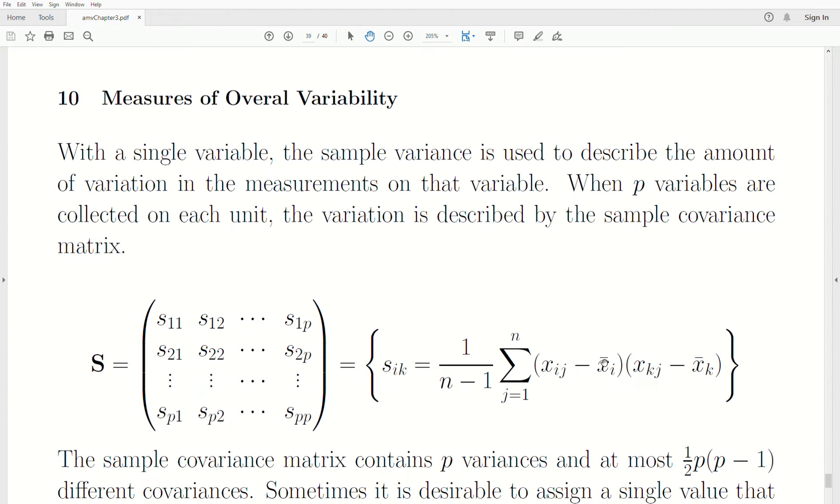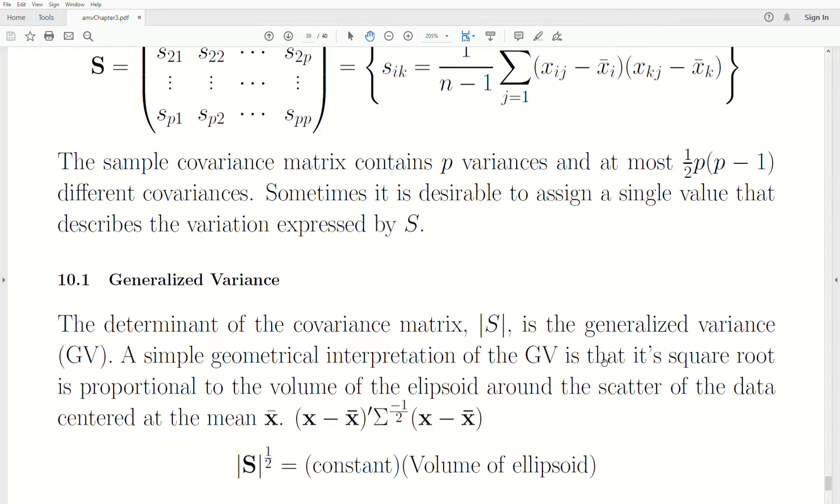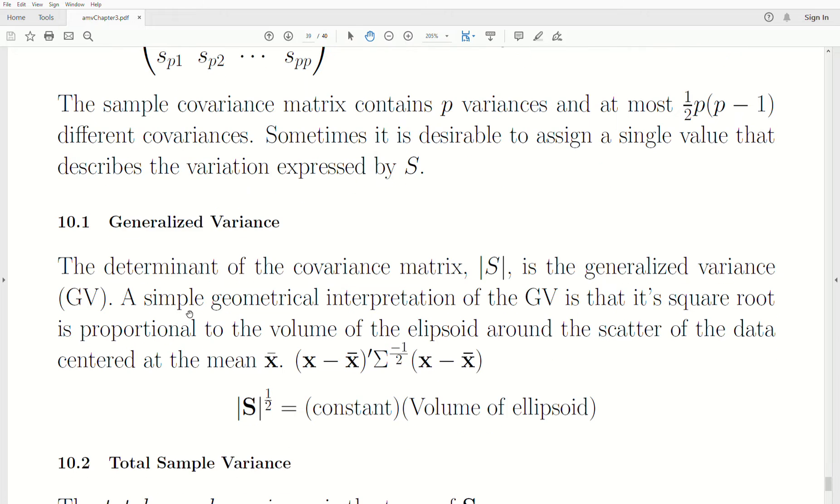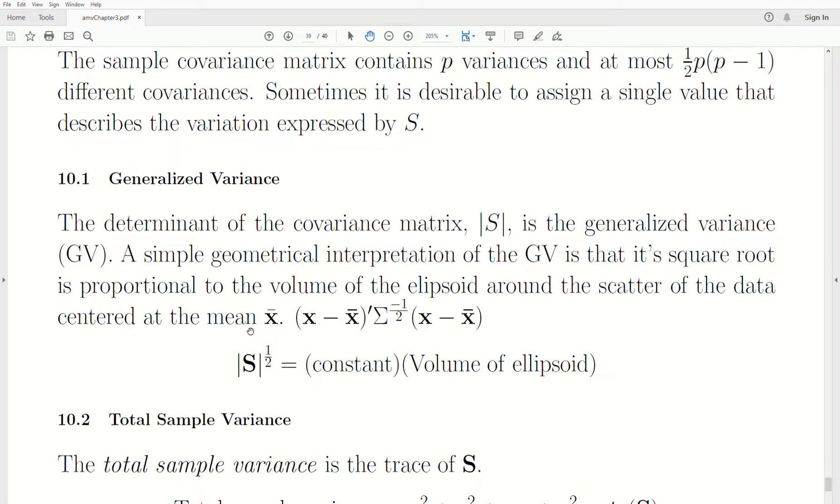Well, that's what the generalized variance is. That's what it describes. It's actually the determinant of the covariance matrix. So, it's the determinant of S, and that's the generalized variance. It's a simple geometric interpretation for the generalized variance. The square root of the generalized variance is proportional to the volume of that ellipsoid around the scatterplot of the data about the mean, that's centered at the mean. So, this quadratic form describes an ellipsoid. In two dimensions, it's an ellipse.